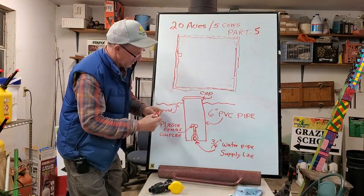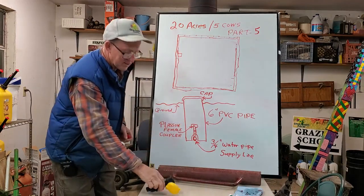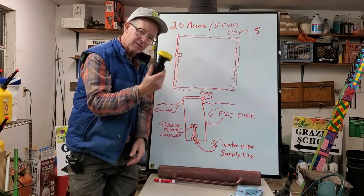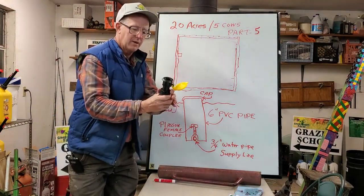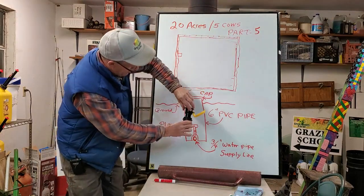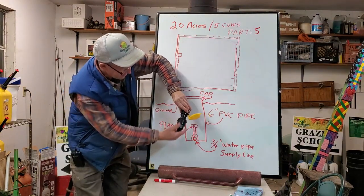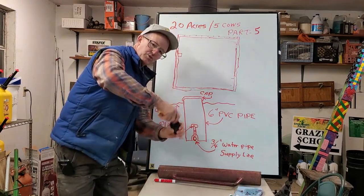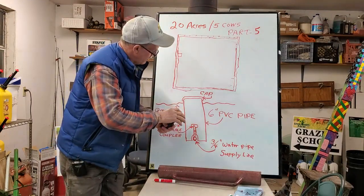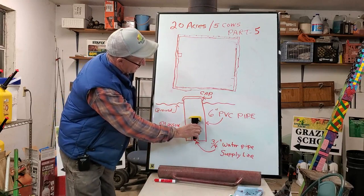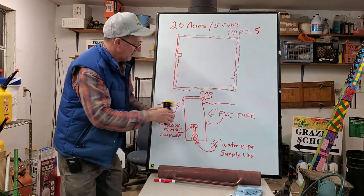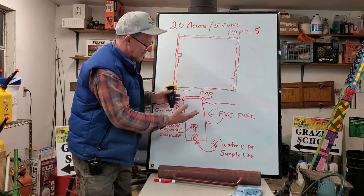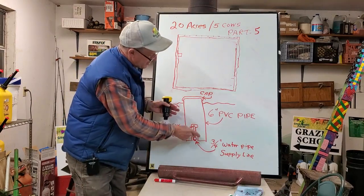So here's your supply line. This piece right here is the female. This is a Placin quick coupler. This is the female. You plug in. This is hooked right down here into your supply line. It screws right into the teat. That's three-quarter inch pipe threads. Just screws right into a female teat. Put the cap on it. So it's sitting down in here. The animals can't break it off. It's down below the ground.